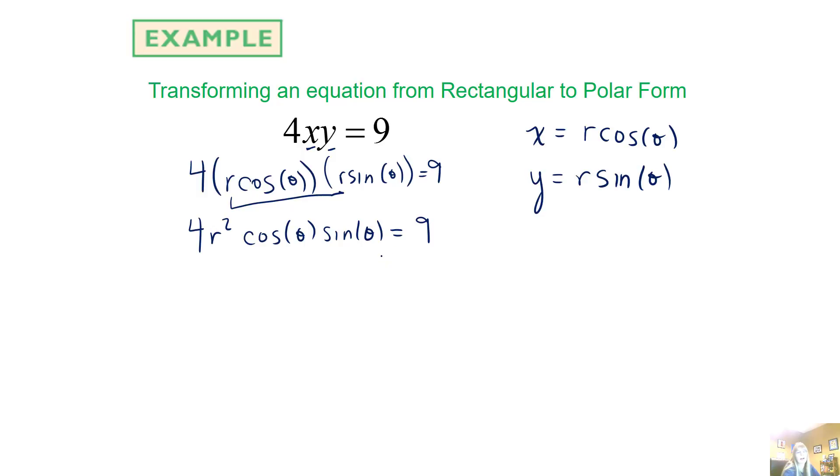Now, from here, I'm going to factor out a 2 r squared. So if I do that, that gives me 2 cosine theta sine theta. And you might say, but why would you do that, because I remember identities. And this would be a double angle formula. So I end up here with 2 r squared. And then my double angle, that would be sine of 2 theta equals 9.